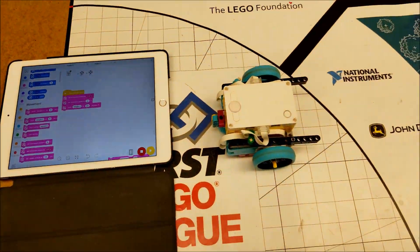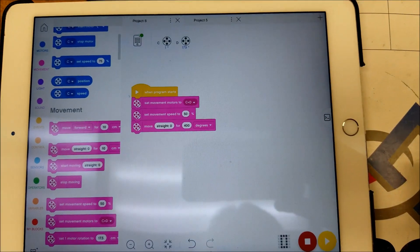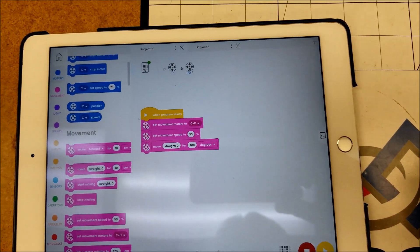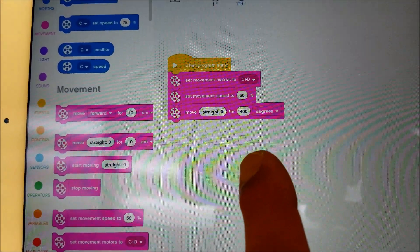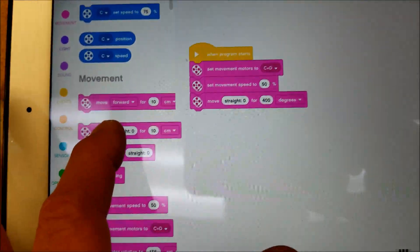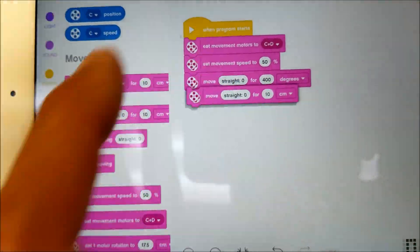Now if we were to add a turn into this program, so let's say we wanted to go forward for 400 degrees and then make a turn, I'm just going to grab that same block.